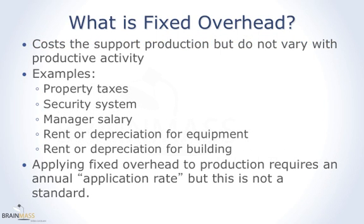What is fixed overhead? These are costs that support production but don't vary with production — property taxes, the security system at the plant, the manager's salary for the plant, rent or depreciation for equipment or the plant building. Those are all fixed per month or per year, and they don't go up or down if production goes up or down. When we apply fixed overhead to production, we need some kind of application rate; we can't just put the whole annual amount in there in one chunk.